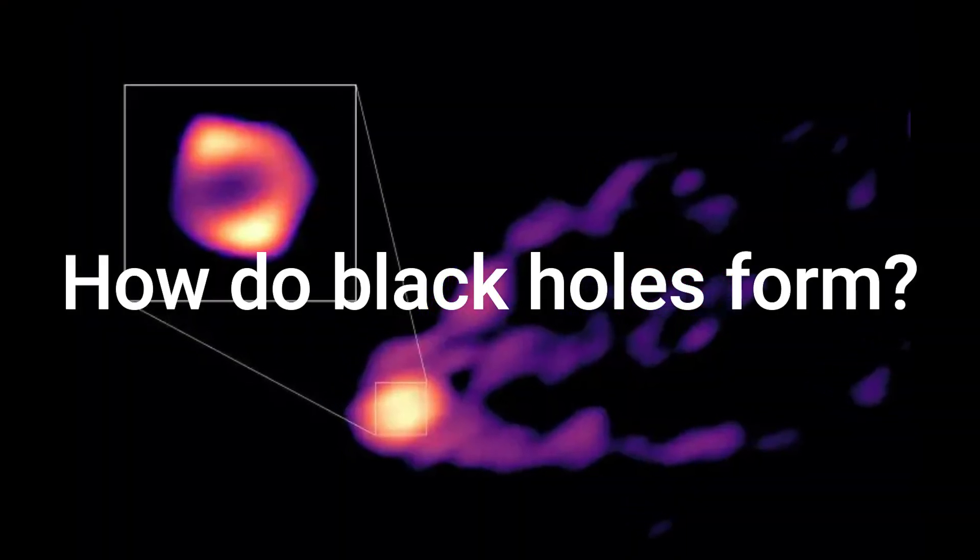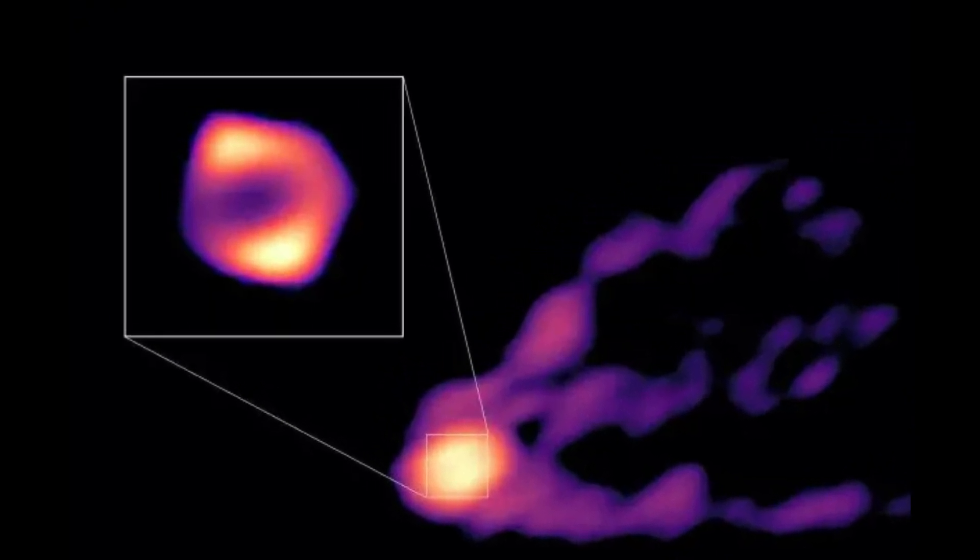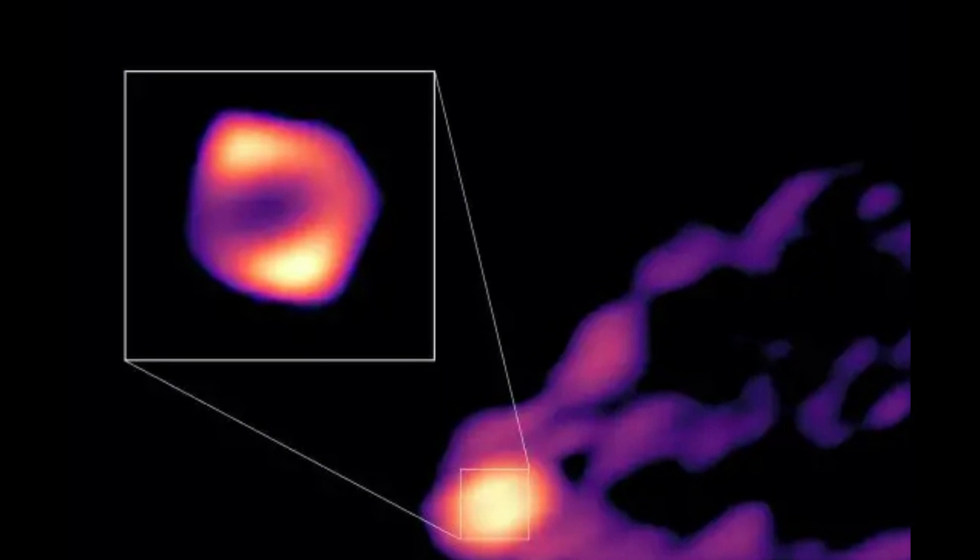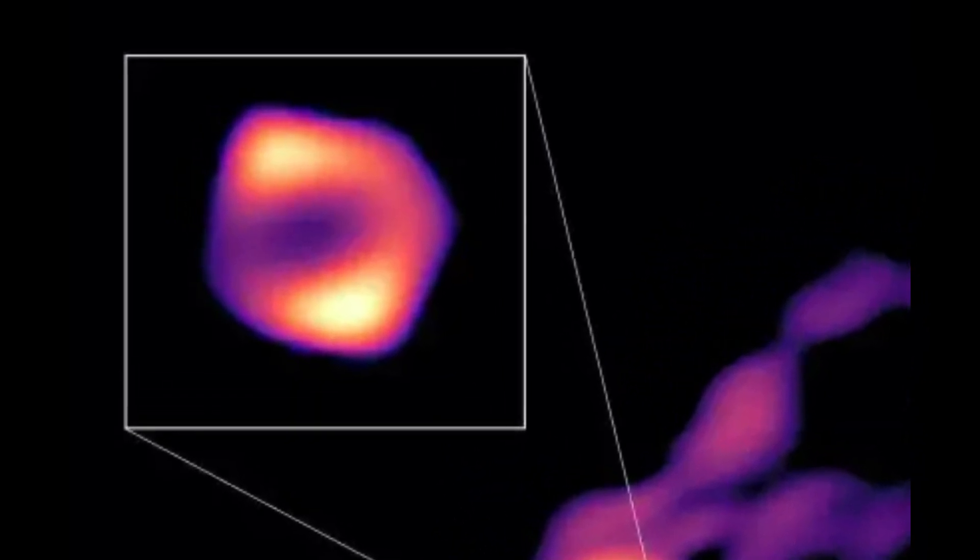How do black holes form? Black holes are expected to form via two distinct channels. According to the first pathway, they are stellar corpses, so they form when massive stars die.